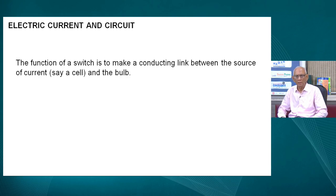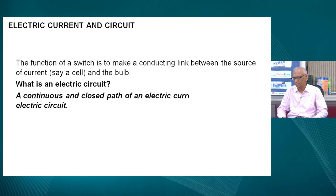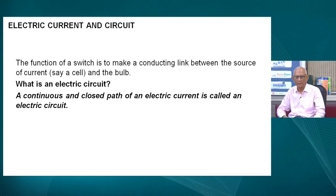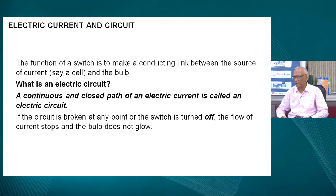The function of the switch is to make a conducting link between the source of current — say a cell — and the bulb. A continuous and closed path of an electric current is called an electric circuit. Remember, closed path — if the path is broken, the current doesn't flow. If the circuit is broken at any point or the switch is in the off position, the flow of current stops and the bulb does not glow anymore.